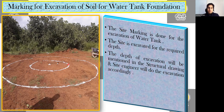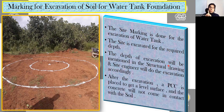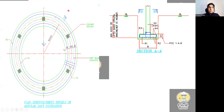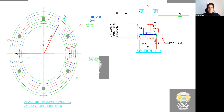Once we understand site marking, we do the excavation. How much excavation of soil has to be done will be mentioned in the structural drawing, and I'll be showing you the structural drawing as well. After the excavation, a PCC is placed to get a level surface so the concrete does not come in contact with the soil. In the drawing, the radius is given as 2525, or 2.525 meters. The diameter is 2 times the radius, so the diameter is 2 × 2525.